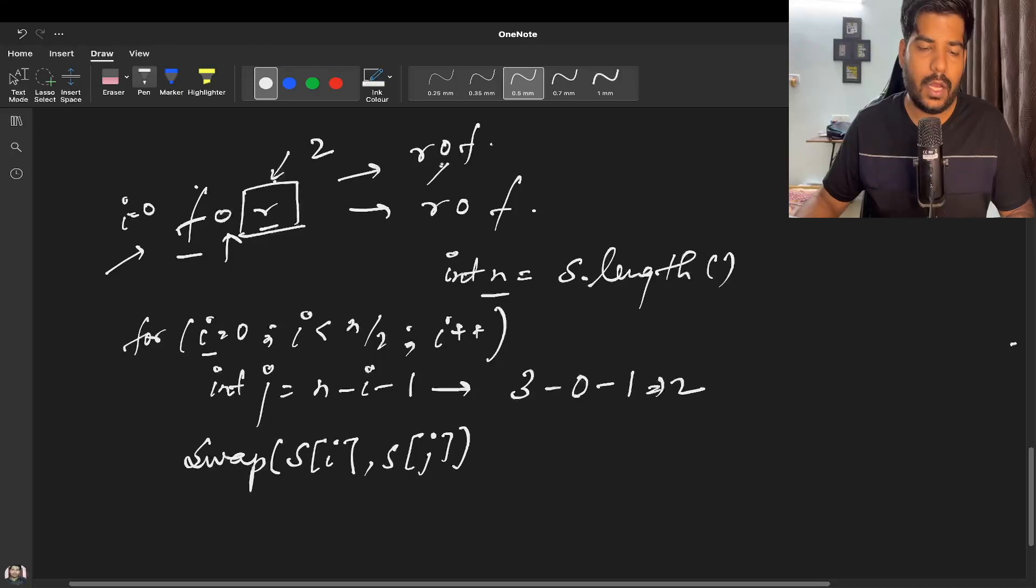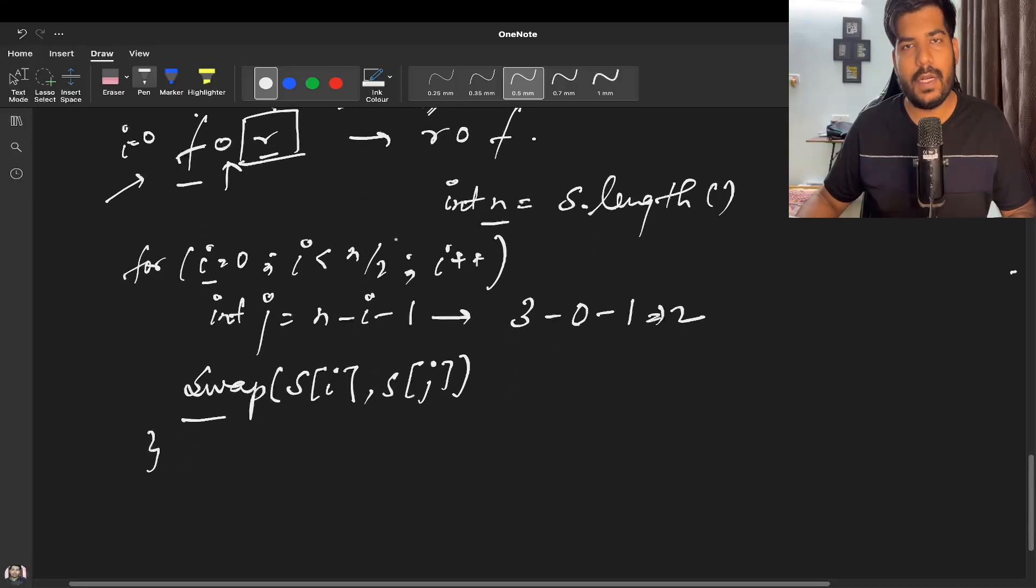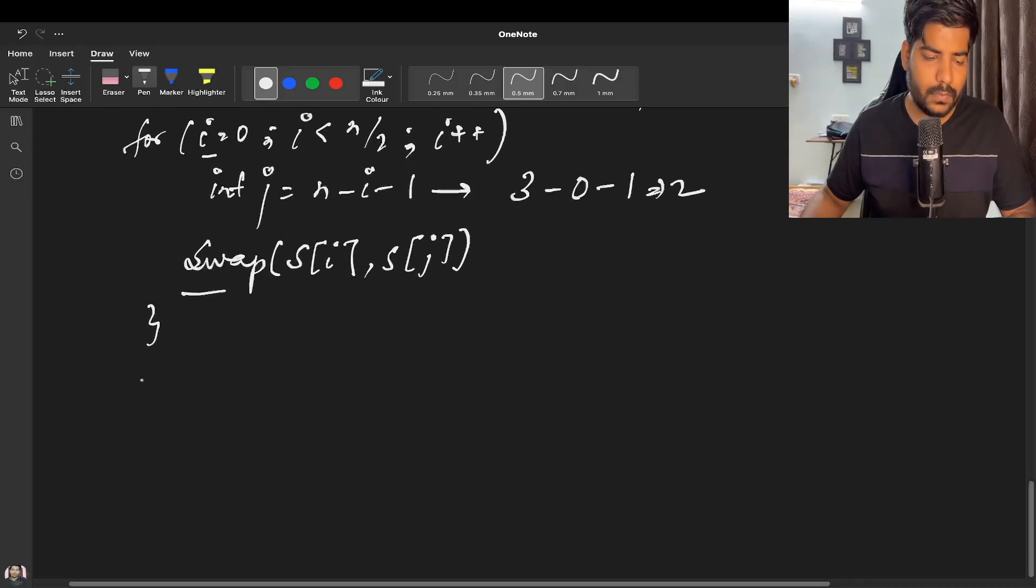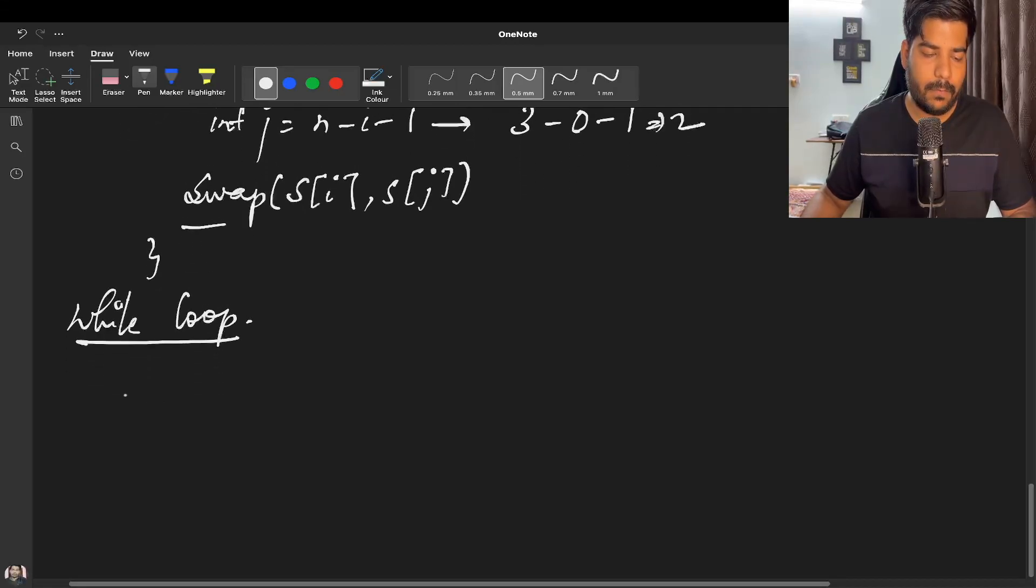What will happen? F will be replaced with R in the first step. In the next step, i will be at this index, but s[i] and s[j] are the same, so the swap will replace O with O only. In the end, our string will be 'rof'. I hope you've understood the for loop. Now let's discuss the while loop method.